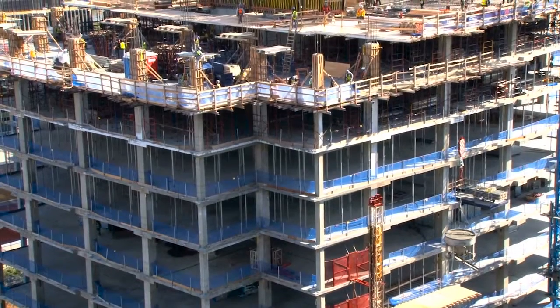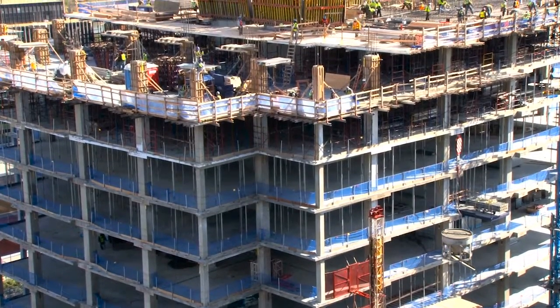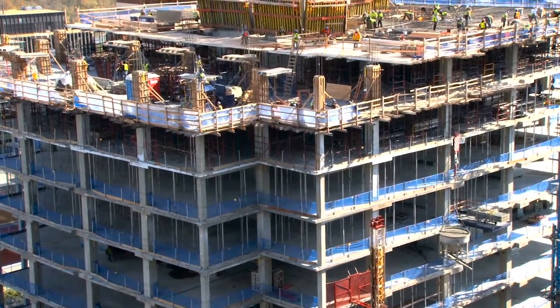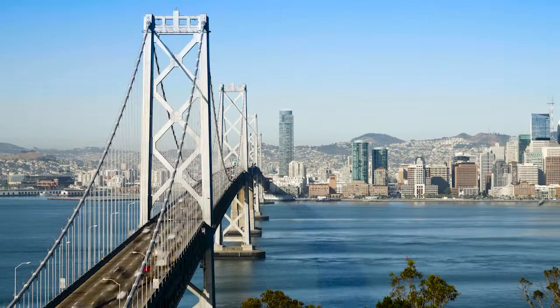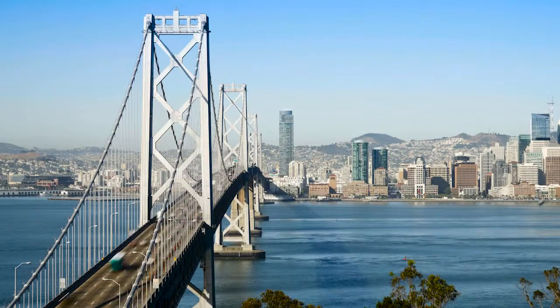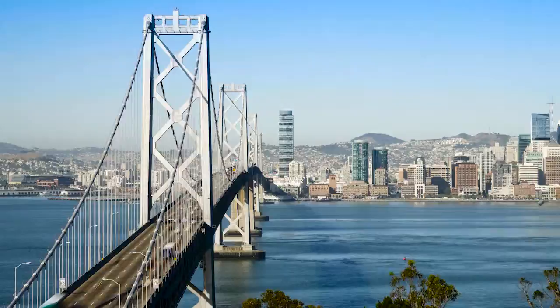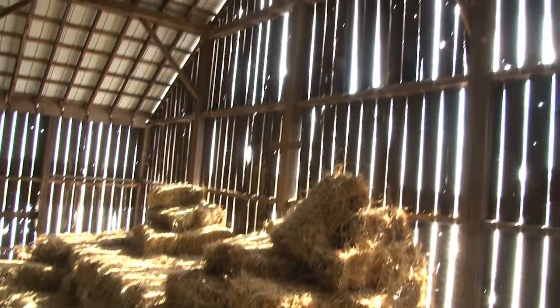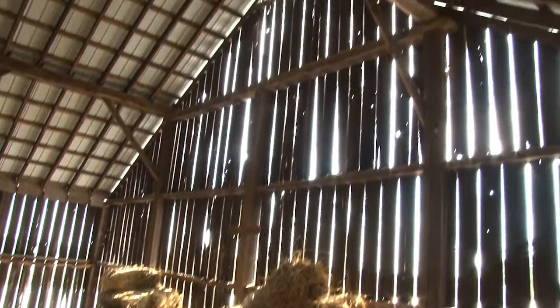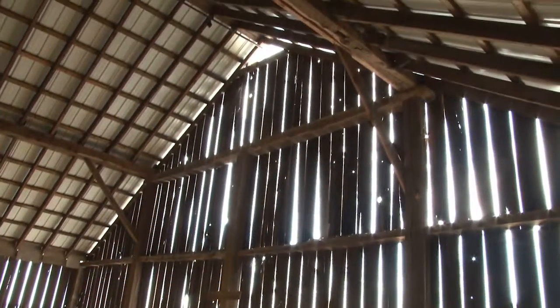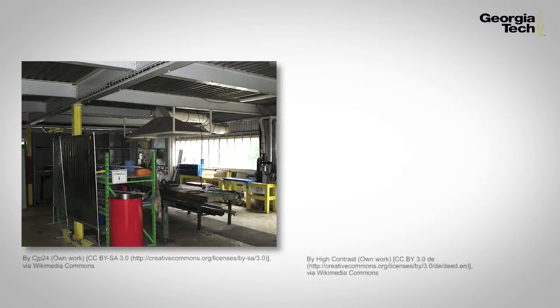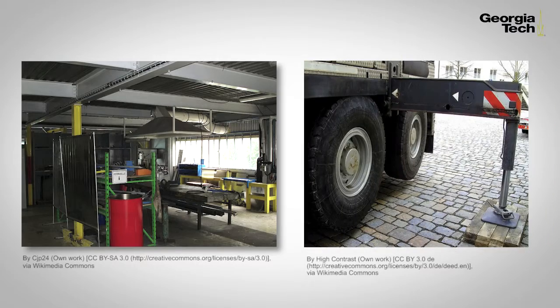We often think of beams and their traditional use in buildings or bridges or other large structures, but smaller structures can also include beam elements. Some examples might be mechanical machine frames or vehicles.